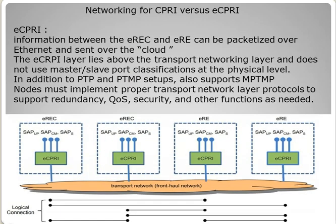On the other hand, in eCPRI — where we previously had CPRI with REC and RE, now in 5G we have eCPRI with EREC and ERE — information between EREC and ERE can be packetized over Ethernet and sent over the cloud. There is no dedicated fiber link; we have the cloud. The eCPRI layer lies above the transport networking layer and does not use master-slave port classification at the physical layer. In addition, it not only supports point-to-point and point-to-multipoint setups, but also supports multipoint-to-multipoint nodes. However, these must be properly implemented to support redundancy, QoS, security, and other functions as needed.